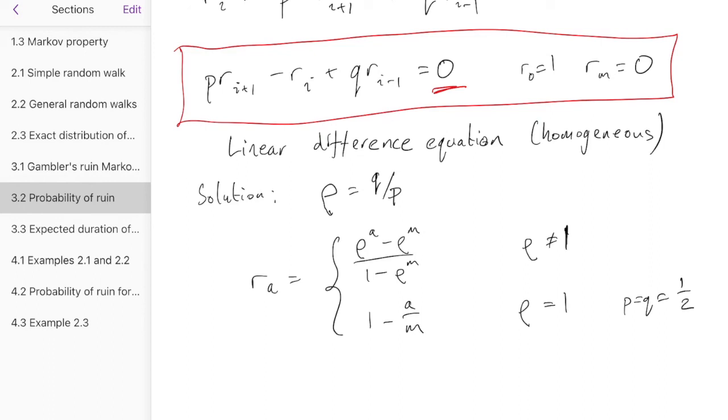Also, there's just a little bit in the notes here that you should read, which says, what if Alice is playing against a very rich casino? What can we say about that expression here? And I'll leave you to read that bit in the notes.